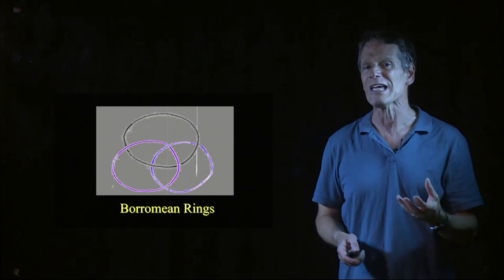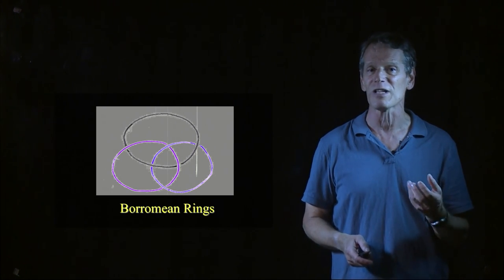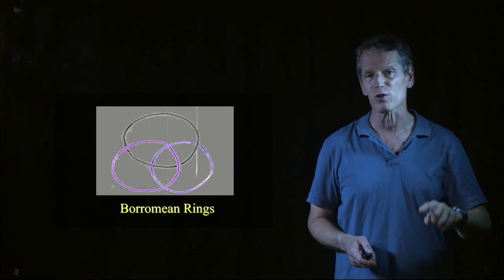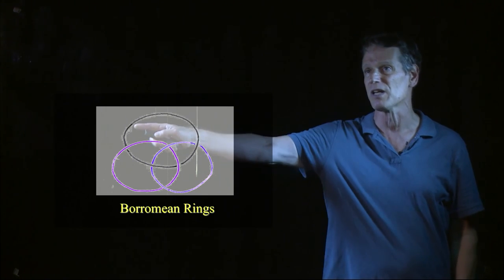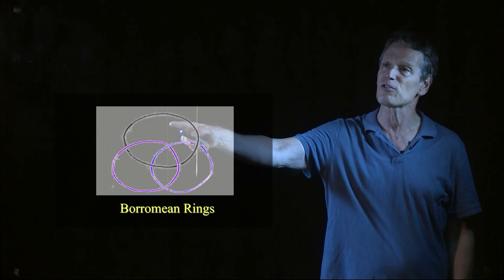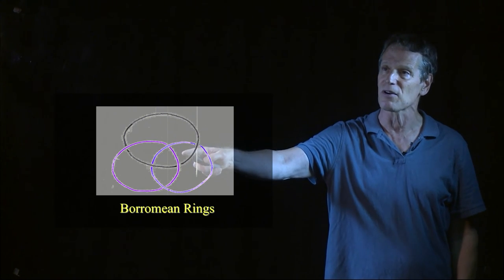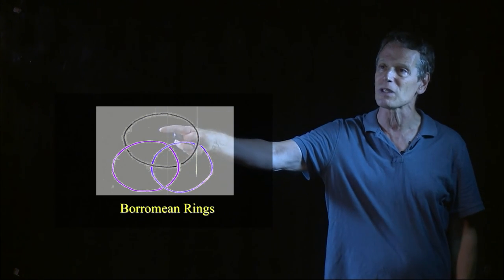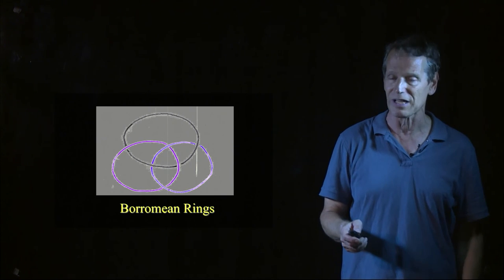Here's a very famous link. Now, the difference between a link and a knot is a link is allowed to have more than one circle knotted. So you see in this particular example right here of the Borromean rings, it has three rings that are knotted together. Notice each of them individually is a trivial knot, but together they're linked together.